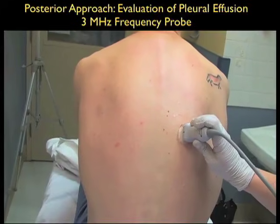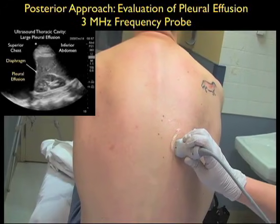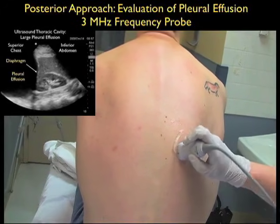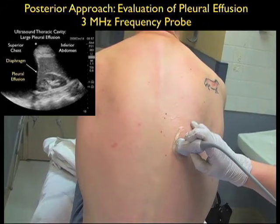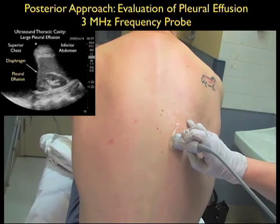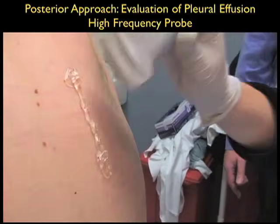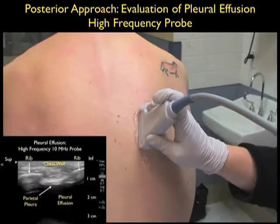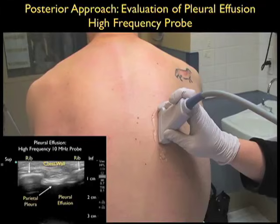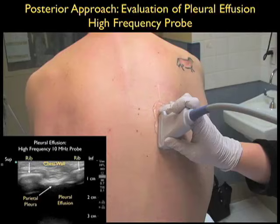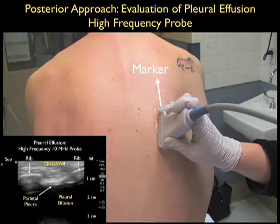Prior to the thoracentesis procedure we'll investigate the pleural effusion using a 3 megahertz probe. Notice the probe is placed along the posterior chest wall first with the probe marker in the long axis trajectory oriented towards the patient's head. We can then swivel the probe into the lateral orientation with the probe marker lateral to further investigate above the diaphragm for a suitable collection of pleural effusion. A clinical pearl is to also look with a 10 megahertz high frequency linear array probe prior to the thoracentesis puncture, placing it along the posterior chest wall in the long axis configuration, as well as oriented between the patient's ribs in the lateral orientation, to further investigate the anatomy.